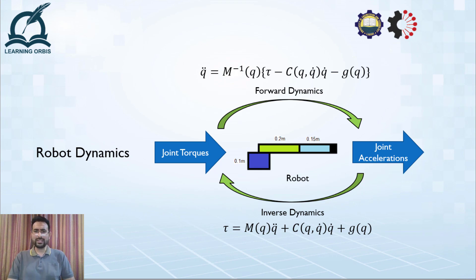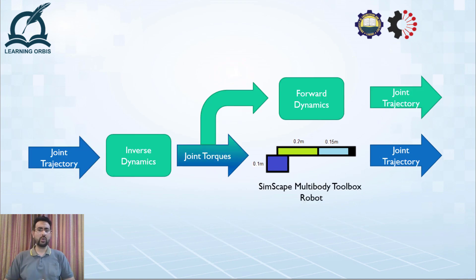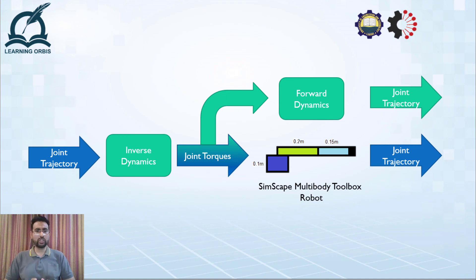All of this looks quite simple, but it's not — because modeling a physical system through equations of motion is not only difficult but also impossible to do perfectly. No matter how many things you incorporate into these equations, some things will be left out and you won't get a mathematical model of the exact same thing you have in real life. In the ideal case, whatever trajectory you provide to the inverse dynamics block will generate the required torques, and if those torques are provided to the forward dynamics block or the physical robot, you'll get back the same trajectory.